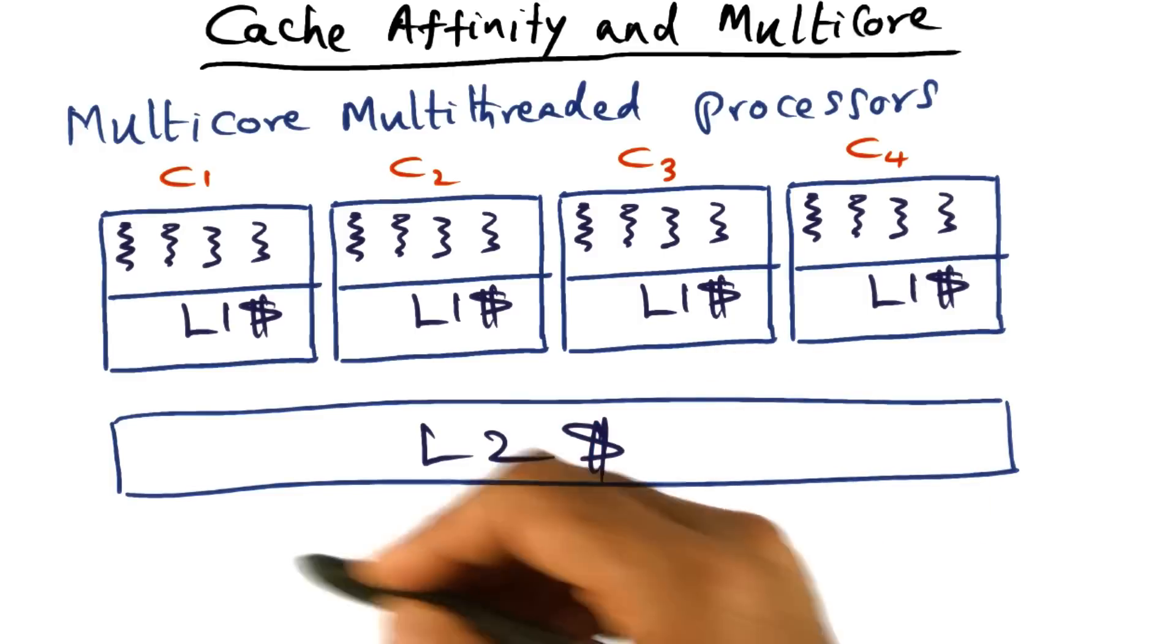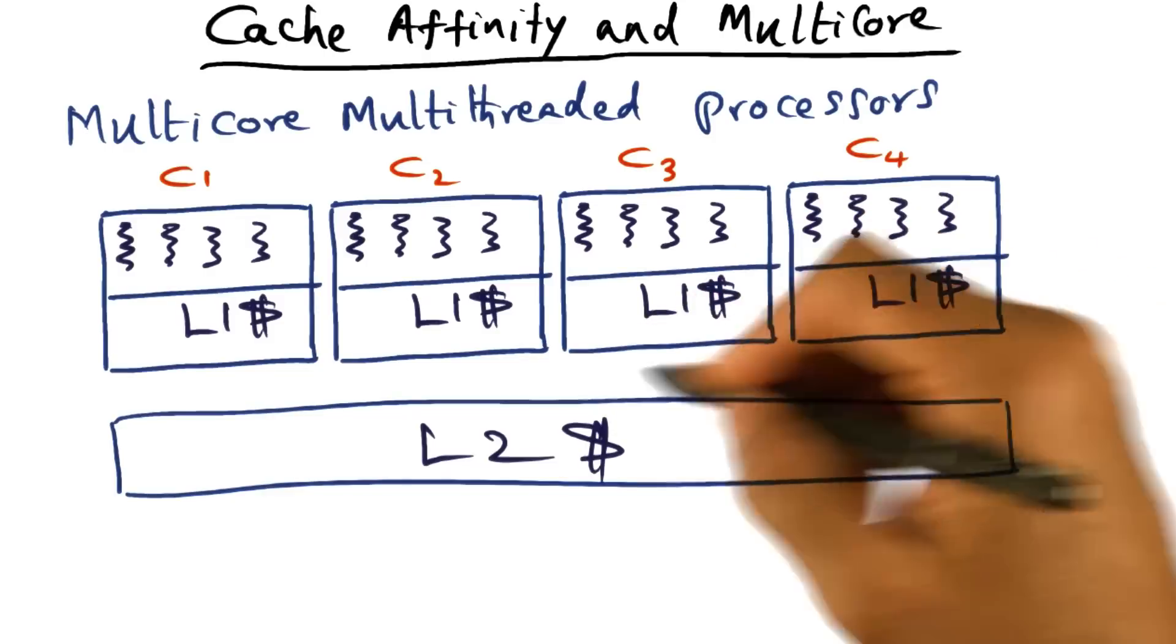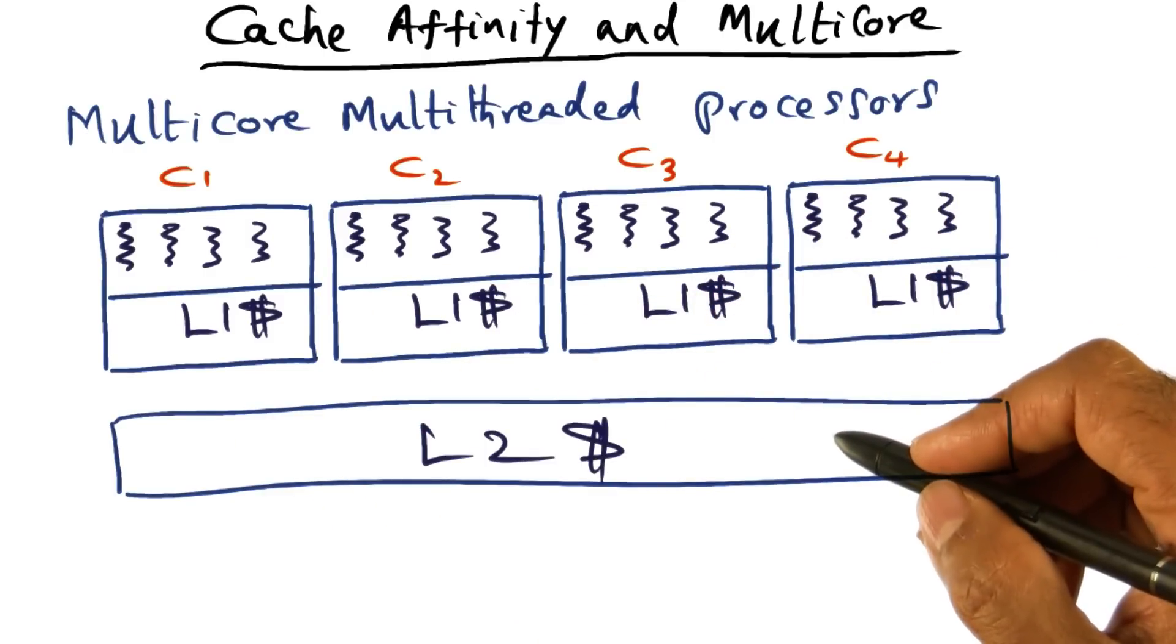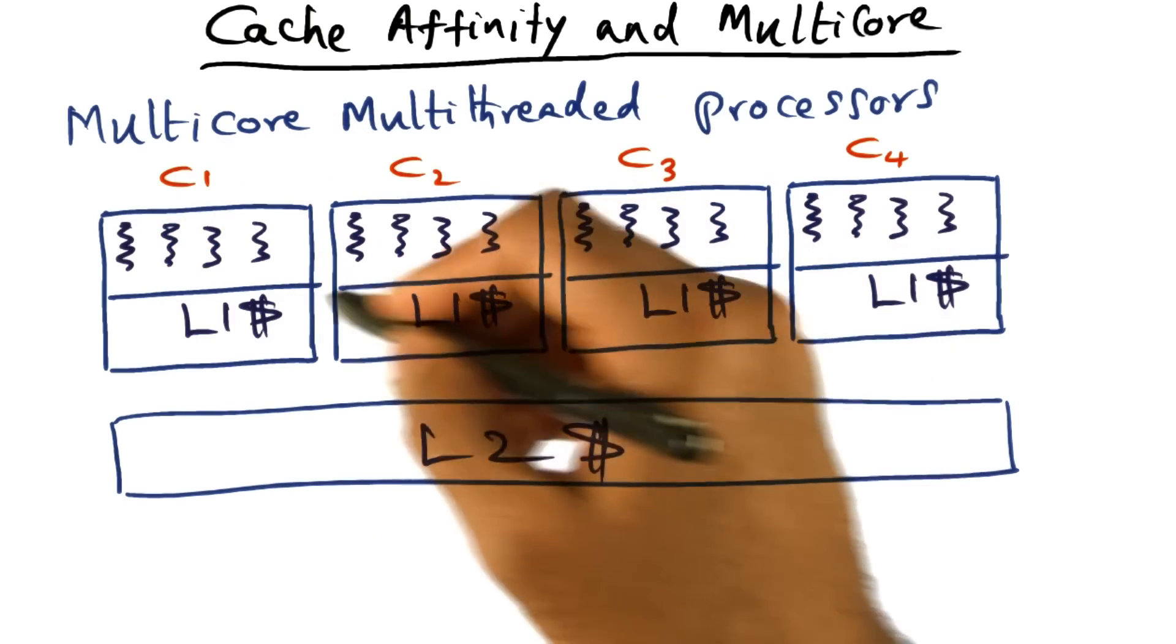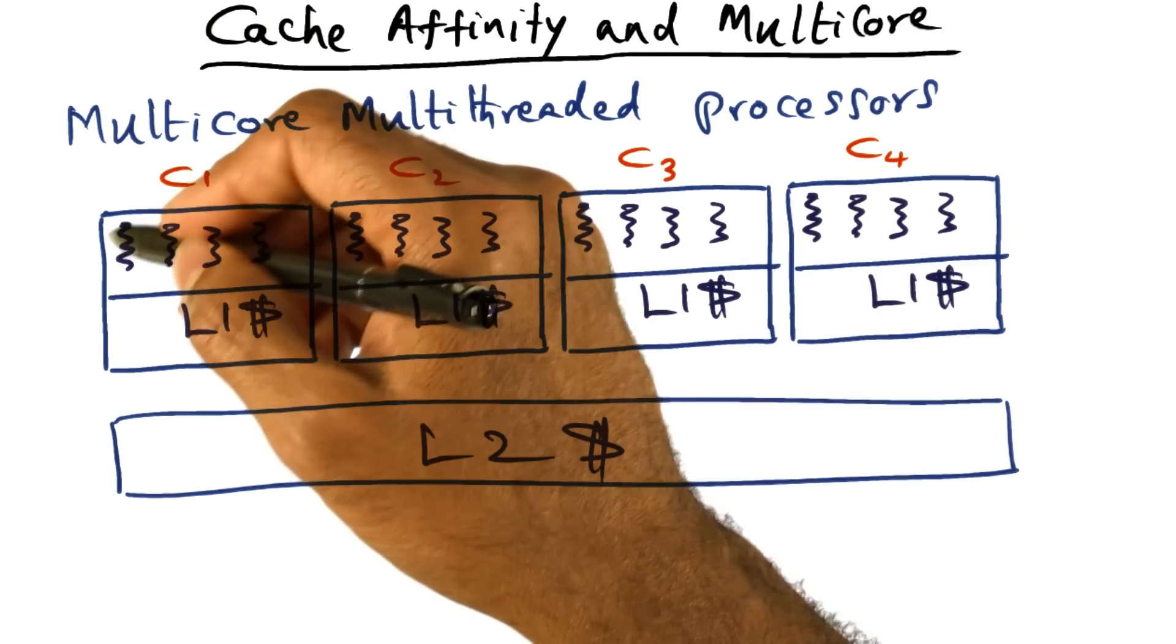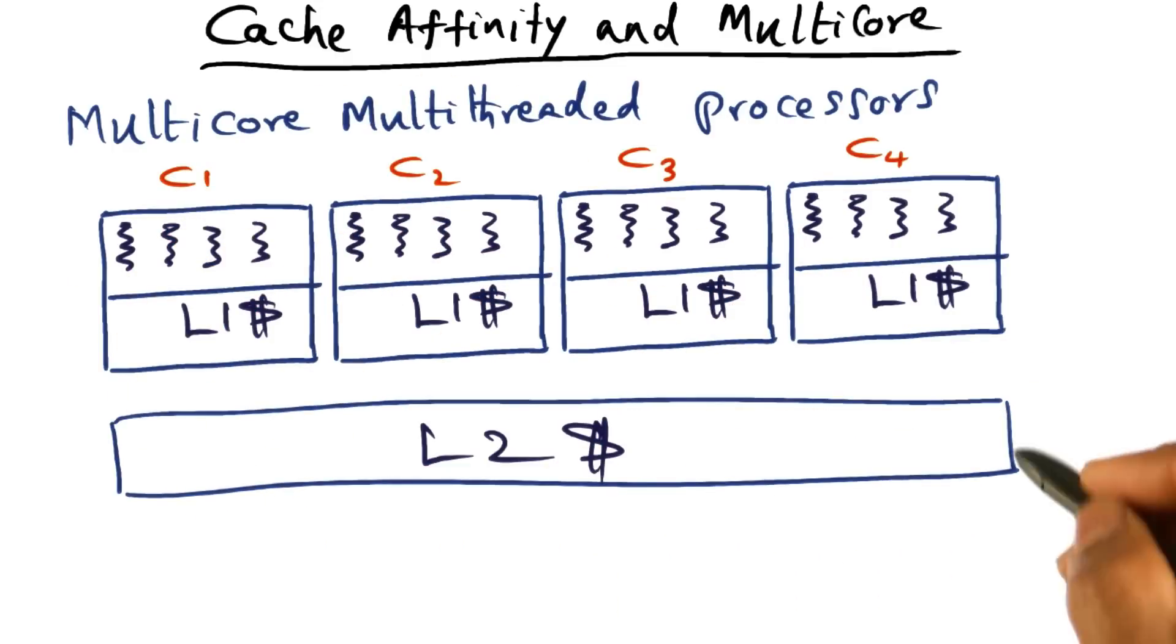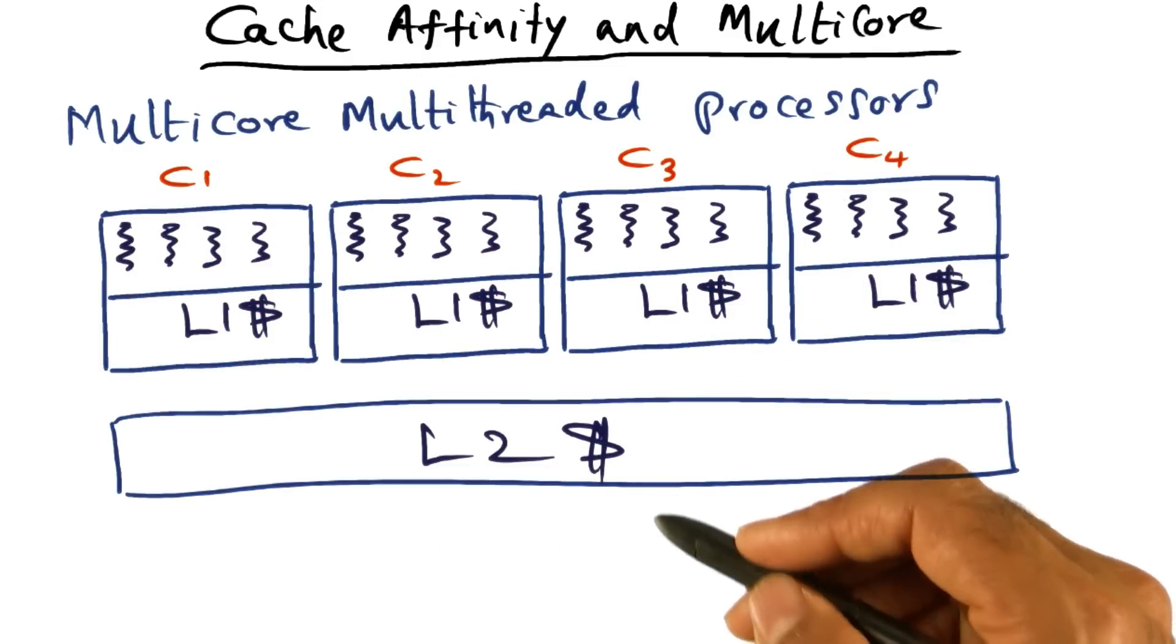And of course, you can extend this idea if there is a third level of cache, but to make things concrete, let's just stick to two levels of caches, L1 cache and L2 cache. And the criterion for the operating system is to make sure that the threads that are currently scheduled on the processors, all the cores that are available, what it wants to try and do is make sure that all the threads will find the contents in the L2 cache. Because missing in the L2 cache is going to be a long latency memory operation.